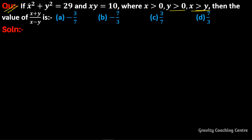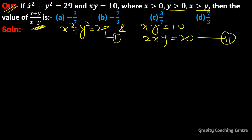In this question we need to find this value, and we're given that x² + y² = 29 and xy = 10. So we multiply this by 2 on both sides to get 2xy = 20. Let's call the first equation (1) and the second equation (2).